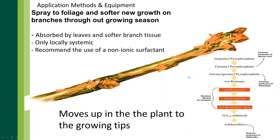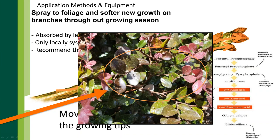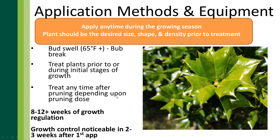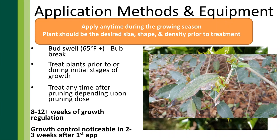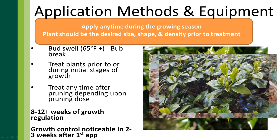Here's what spray-to-drip looks like — we want to make sure we're really coating that plant. On this loropetalum you can see droplets on the leaves and how that solution has dropped down onto the succulent twig tissue. As for when to apply: you can apply any time the plant is actively growing. That could be as early as bud swell, when we start getting consistent temperatures in the mid to high 60s. If you have less than an inch of growth, go ahead and start spraying — we have that nice green twig tissue that the product will be absorbed into.